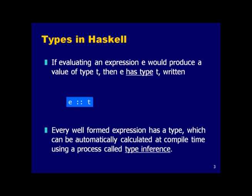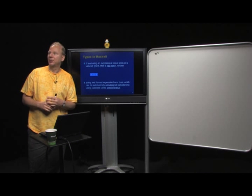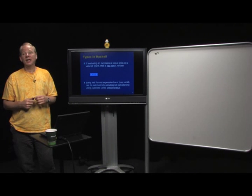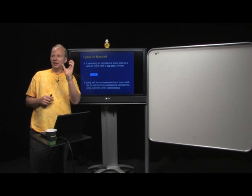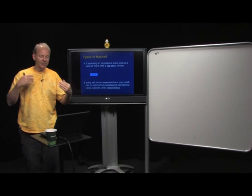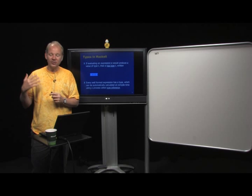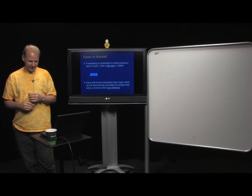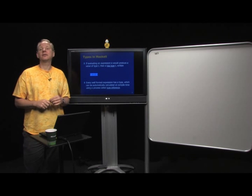In Haskell, you declare or connect a type with an expression using the double colon notation. If you write `e :: T` where e is an expression and T is a type, it means that expression has that type. For example, `False :: Bool` means False has type Bool. This is a little like VB's `expression As Type` syntax, whereas C# reverses the order.